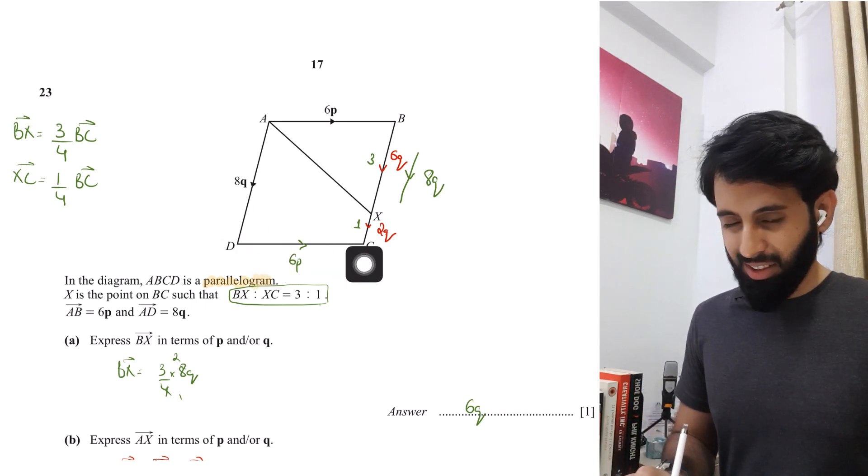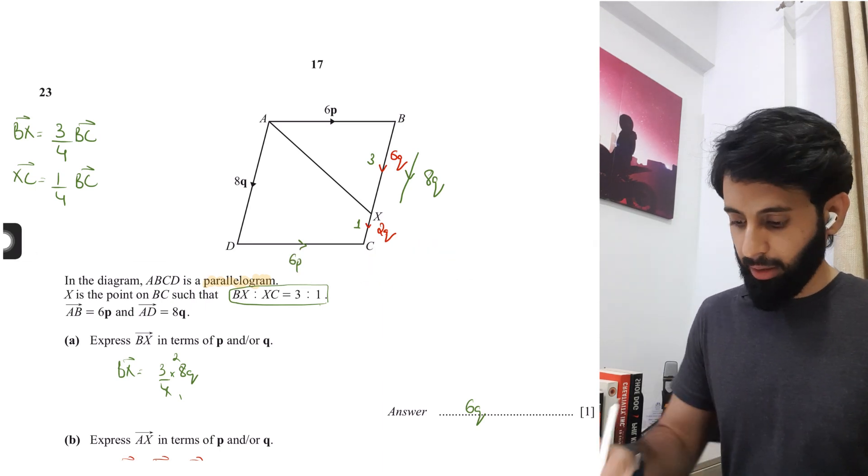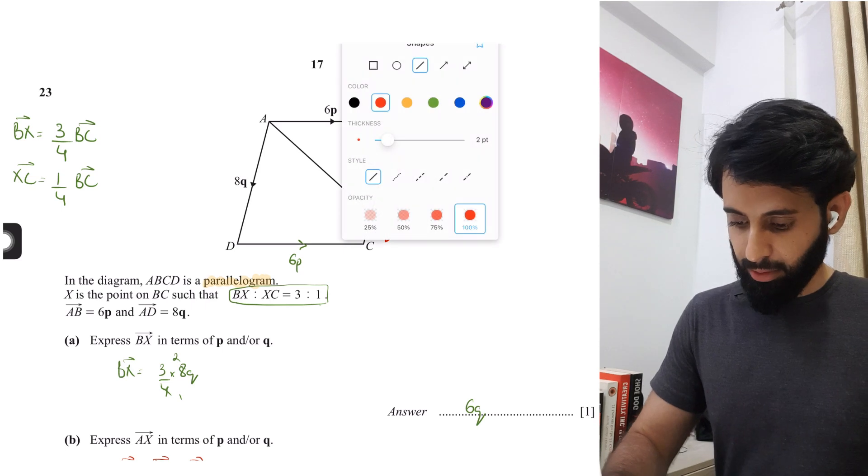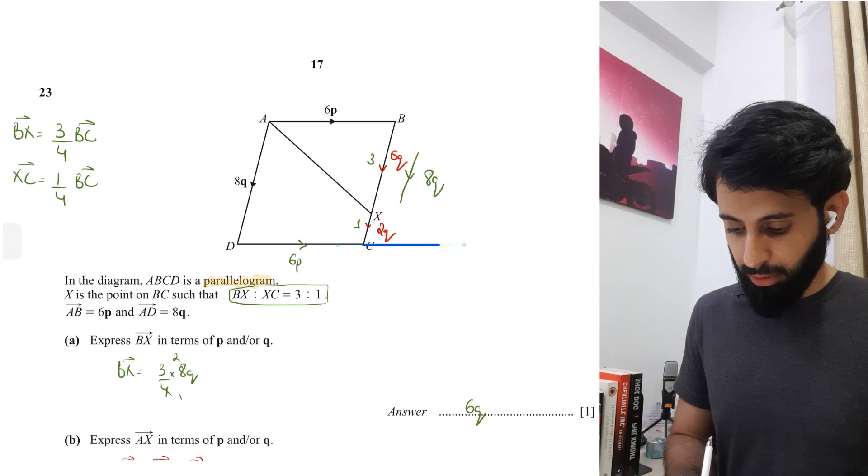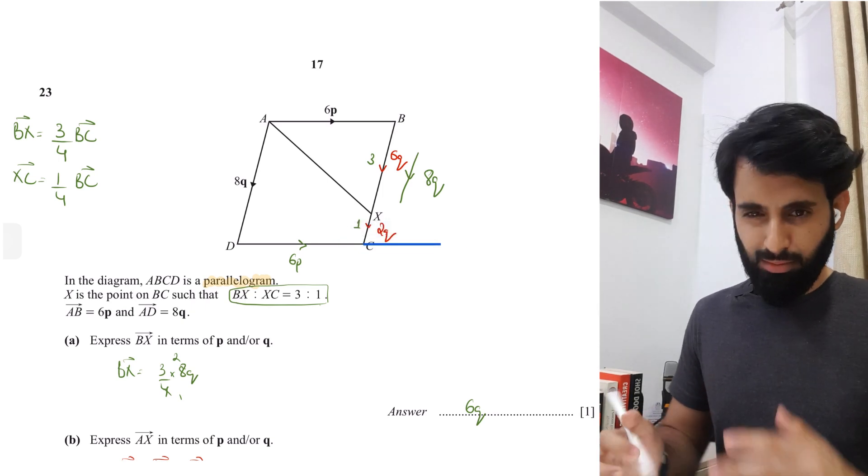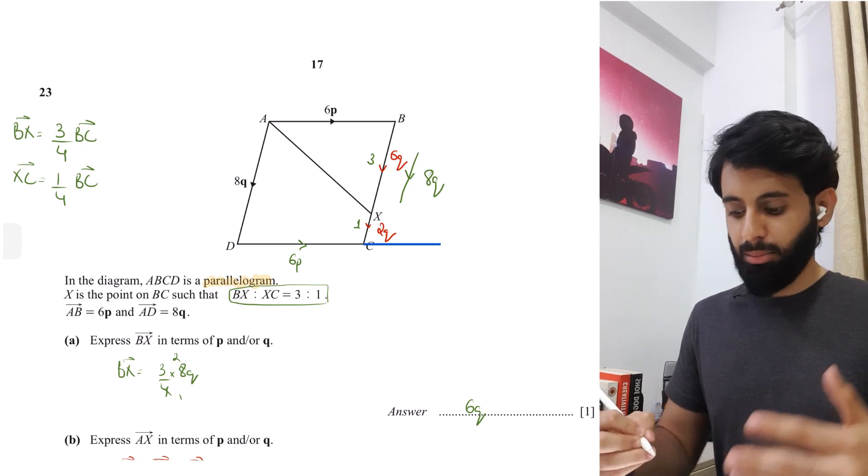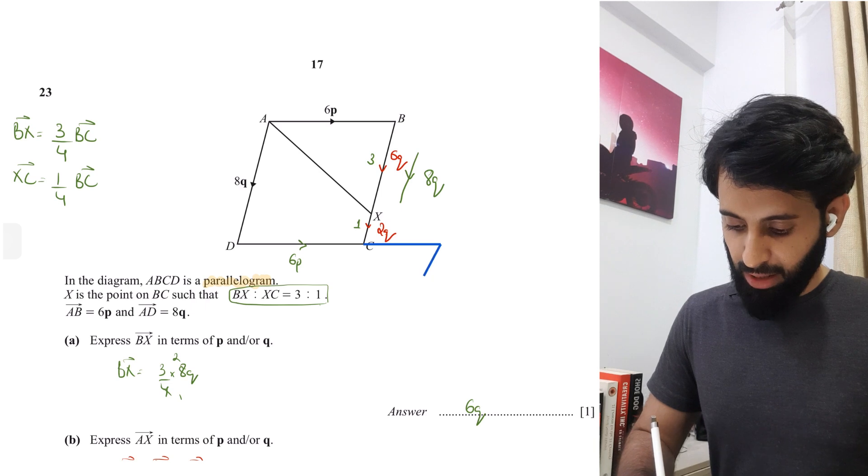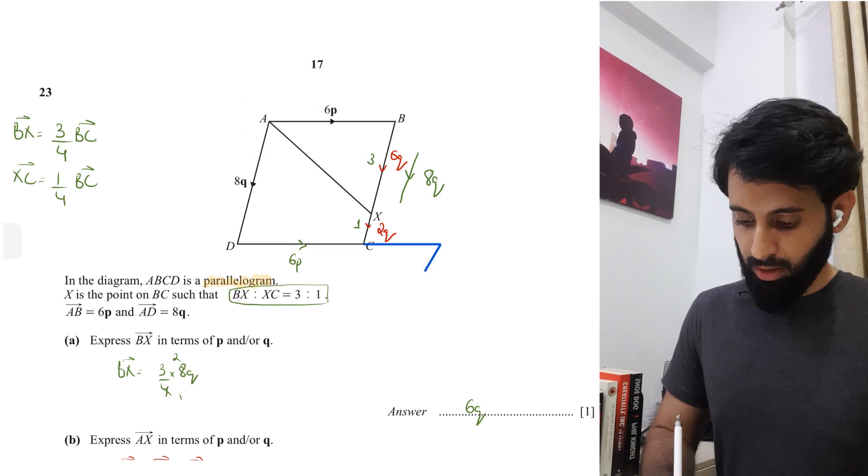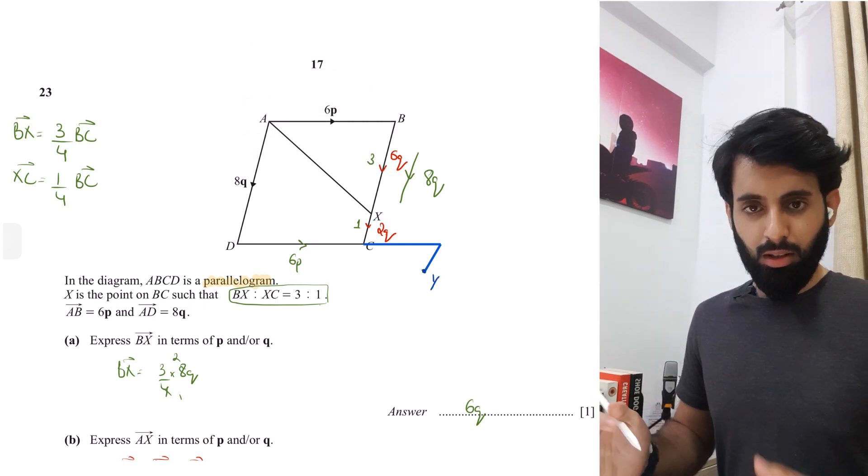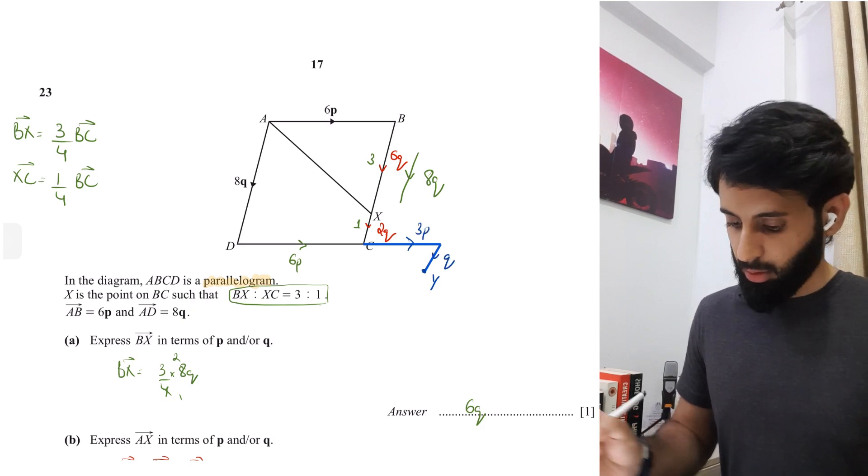If a vector is 3 times of P, it's going to be half the length of AB. I'm trying to get from C to Y. This will approximately be 3P plus Q. We're going to have a vector which is 1 times of Q somewhere here. This is where we're likely to find point Y. This is 3P and this is Q.